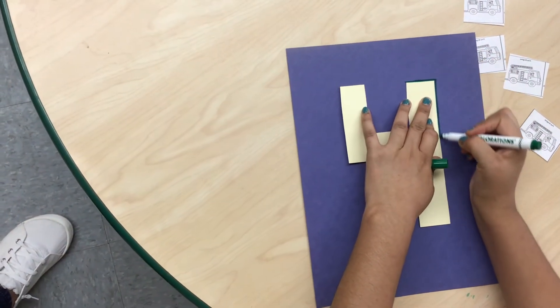First, you are going to trace number four over the construction paper.